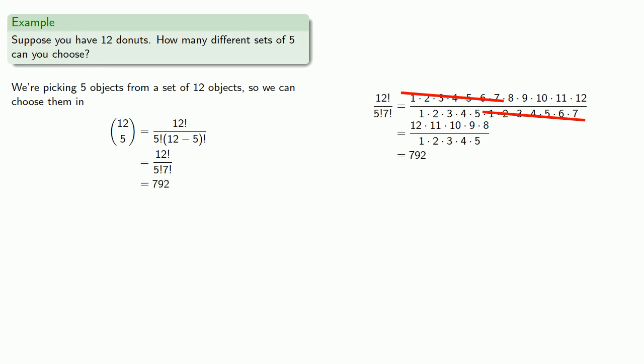You might wonder why we simplified the way we did. The reason is that this allows us an easy way to remember how to calculate these binomial coefficients. First, notice that our denominator is the numbers from 1 through 5, and 5 is the number of things we're choosing. Next, our numerator is the numbers from 12 down to 8, and 12 is the number that we're choosing from.